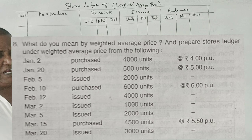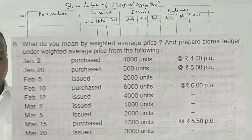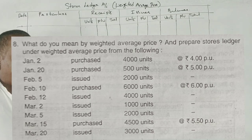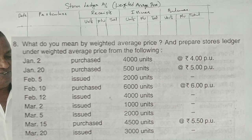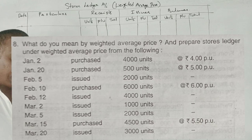Following transactions related to receipts and issue of material Z. 3rd October 2015: 1,000 units received at ₹8 per unit. 5th of October: 800 units issued. 13th October: received at ₹8.60.